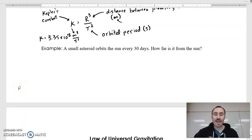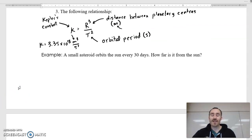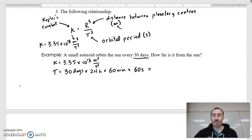So let's try it once. A small asteroid orbits the sun every 30 days. How far is it from the sun? The only information it tells us is this 30 days thing. But we know that anything that goes around the sun is going to use the same k value. And so we know that k is 3.35 times 10 to the 18 meters cubed per second squared. So we already have one variable from that equation. It also tells us the orbital period, t. It's 30 days, but we don't want it in days, we want it in seconds. So 30 days times 24 hours times 60 minutes times 60 seconds. That will give you the orbital period. That's 2,592,000 seconds.